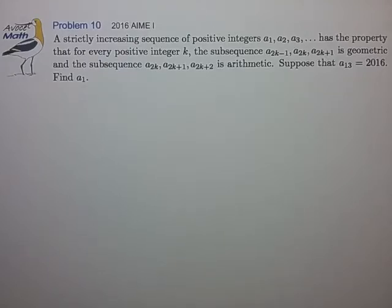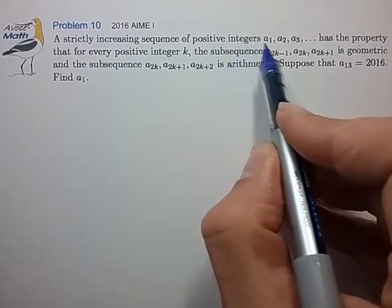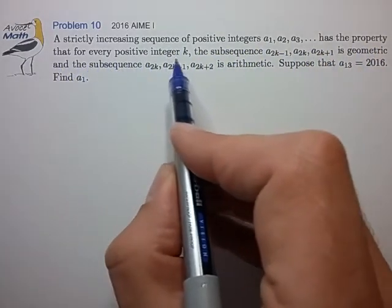Hi, this is problem 10 from the 2016 AIME-I. A strictly increasing sequence of positive integers A1, A2, A3, etc. has the property that for every positive integer k,